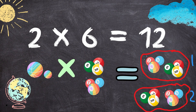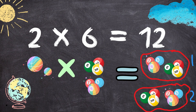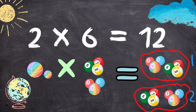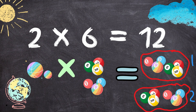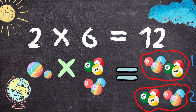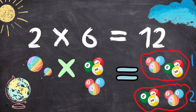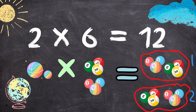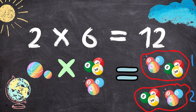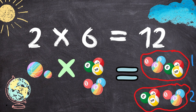Two times six equals twelve. Two balls multiplied by six balls will give you one, two, three, four, five, six, seven, eight, nine, ten, eleven, twelve.